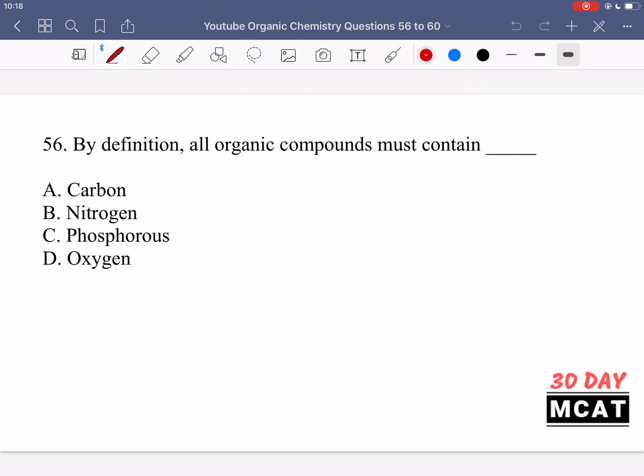Now let's go through the questions together. Question 56 is saying, by definition, all organic compounds must contain blank. So if a compound is organic, what is the key element which it must contain? It is carbon. So that's just a very basic definition of organic chemistry.